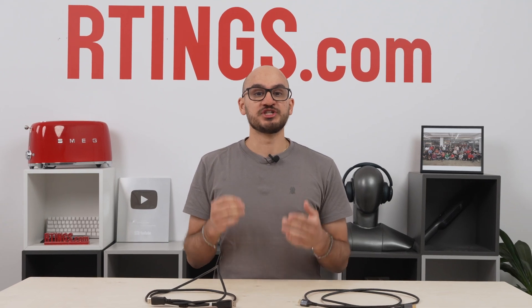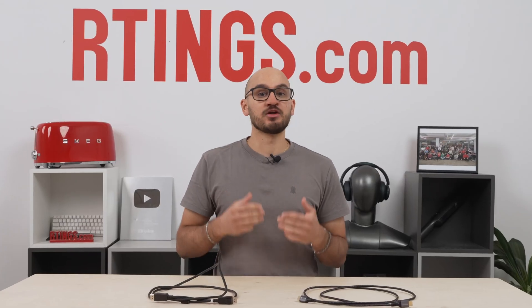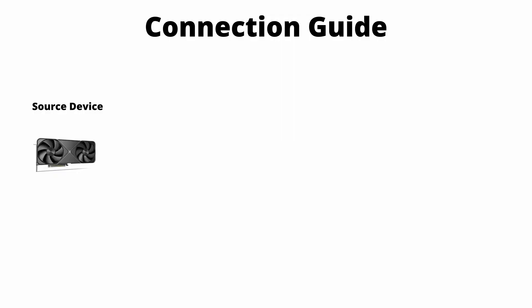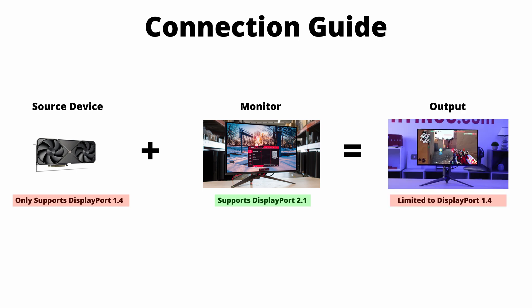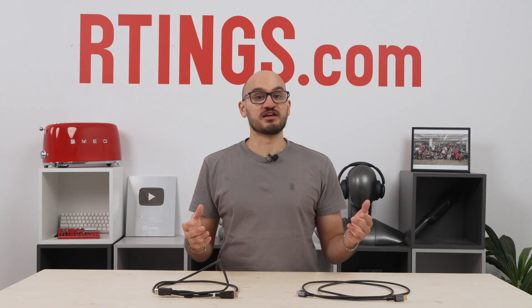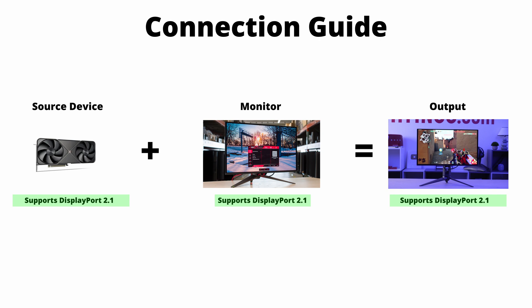DSC is designed to compress the signal without adding latency in order to achieve very high refresh rates. While it's advertised as being visually lossless, it can also introduce bugs and artifacts, so it isn't ideal. Beyond that, the max bandwidth and refresh rate you get depends on the limitations of all components in your setup. For example, even if your monitor supports DisplayPort 2.1, your GPU might only support DisplayPort 1.4, which will limit your setup to DisplayPort 1.4. If you want to take full advantage of the latest HDMI or DisplayPort version, you'll need to make sure every piece of the puzzle supports it, or else you'll be limited to the weakest link in the chain.